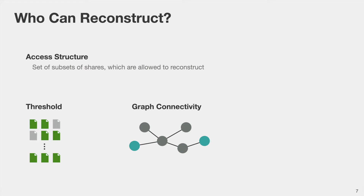A different access structure one can consider is graph connectivity. Here we have a graph with two fixed nodes highlighted in blue, and the shares correspond to the nodes in the graph. We say that a subset of shares is authorized if the corresponding nodes contain a path between the two blue nodes; otherwise the shares are not authorized to learn anything about the secret.